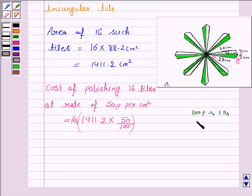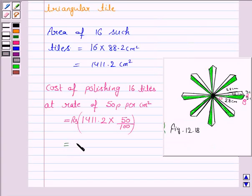As we know that in 100 paisa we have 1 Rupee and 1 paisa is equal to 1 upon 100 Rupee, then 50 paisa is equal to 50 upon 100 Rupees.